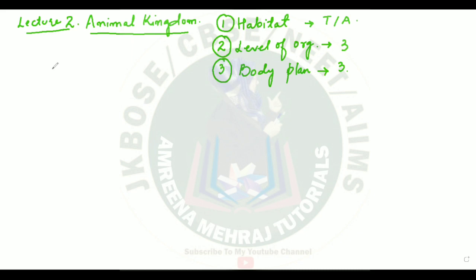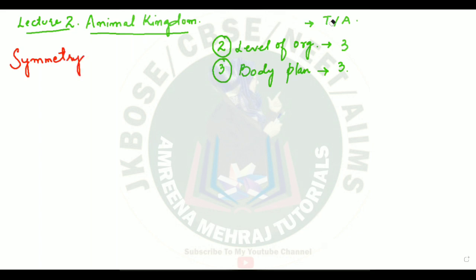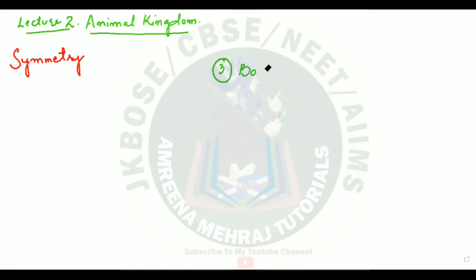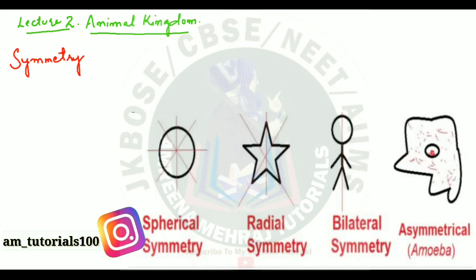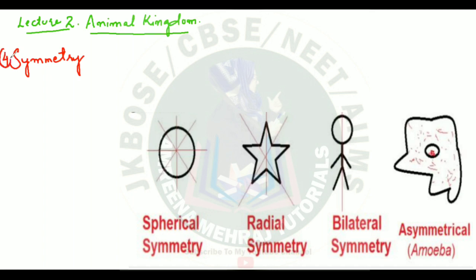Now we will focus on the diversity of animals based on symmetry. Today we are going to understand how organisms can vary and be of various types based on their symmetry. Habitat is done, level of organization is done, body plan is done - now we are focusing on this fourth basis: diversity based on symmetry.